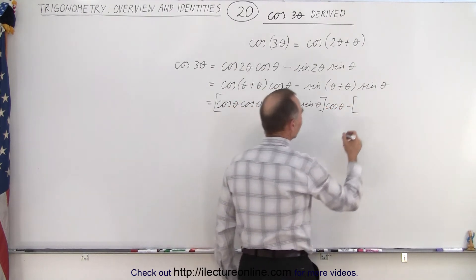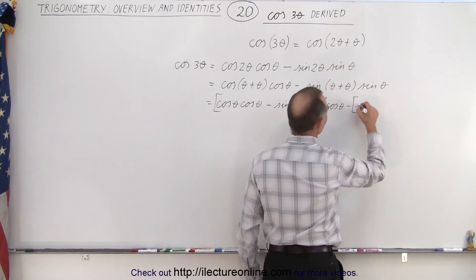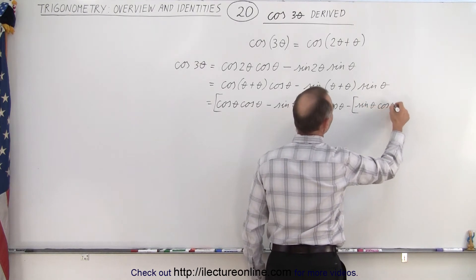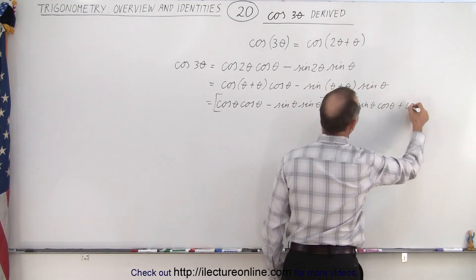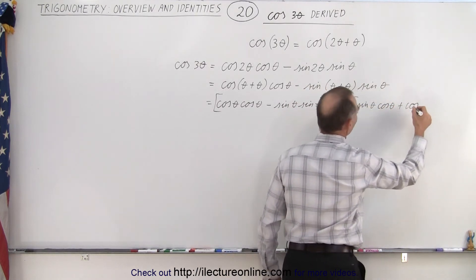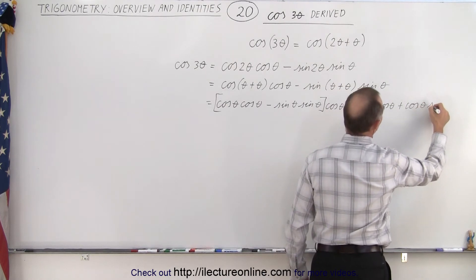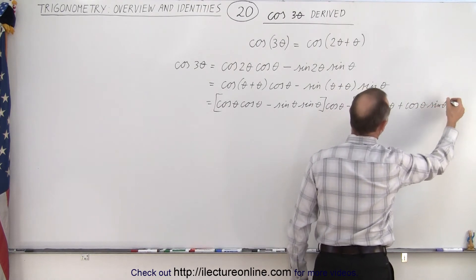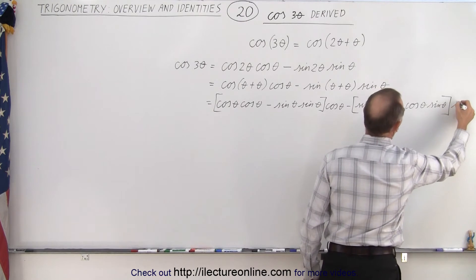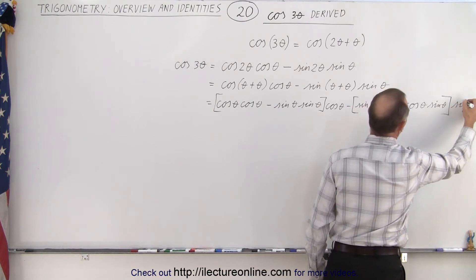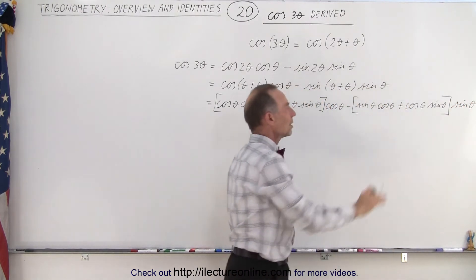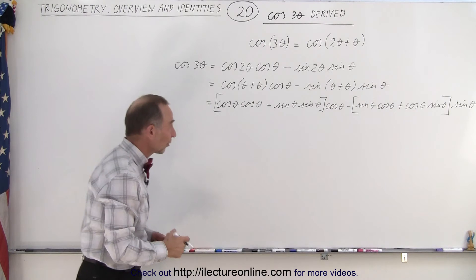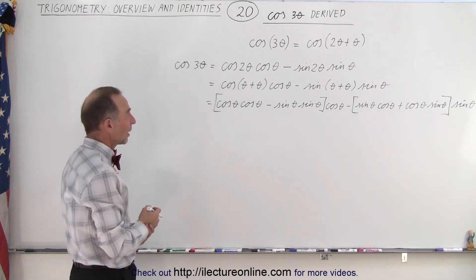The sine of the sum of two angles is the sine of the first angle times the cosine of the second angle, plus the cosine of the first angle times the sine of the second angle. Of course the two angles are the same, multiplied times the sine of theta. That's how we write it out in terms of just the cosine and sine of a single angle.